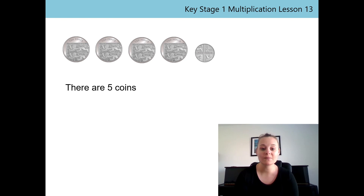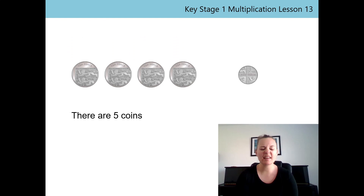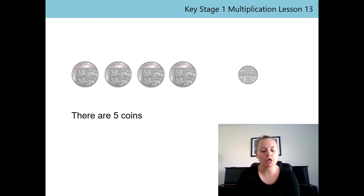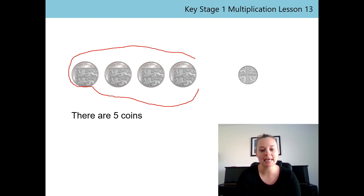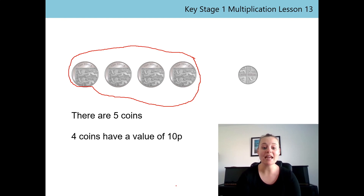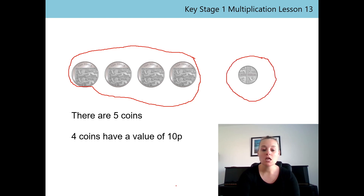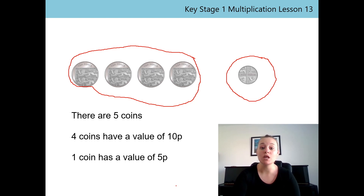Can you say that sentence? Fabulous, well done. Can you remember what we could do next? Now we know we've got five coins in our purse but they're not all the same coins. So what could we do? That's right — we can group them together. So let's group all our 10P coins together. I am grouping my 10P coins — so four coins have a value of 10P. Fabulous. And now we need to group our 5P coin — we have one coin and it has a value of 5P.